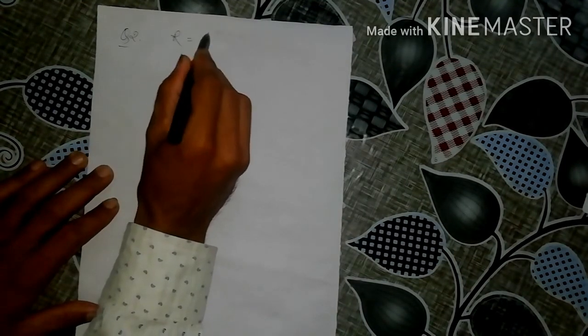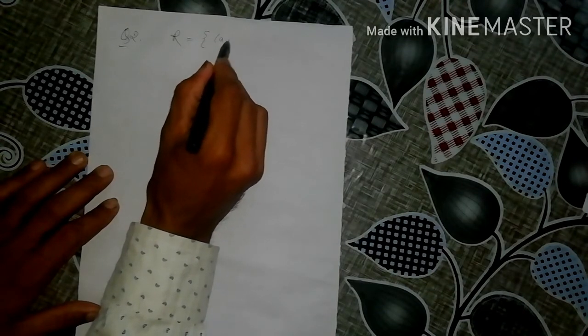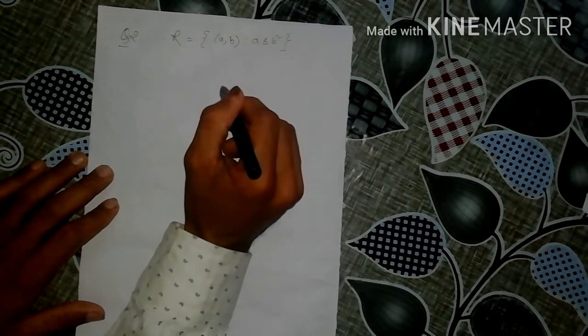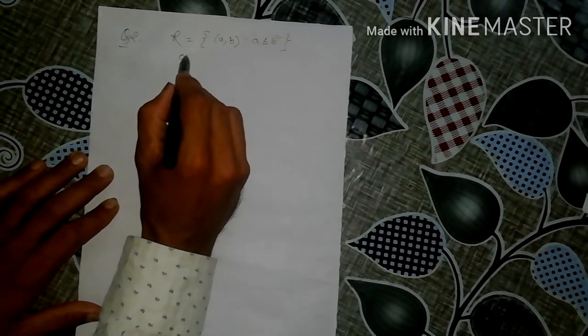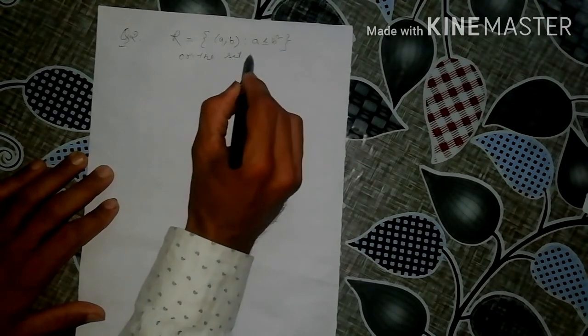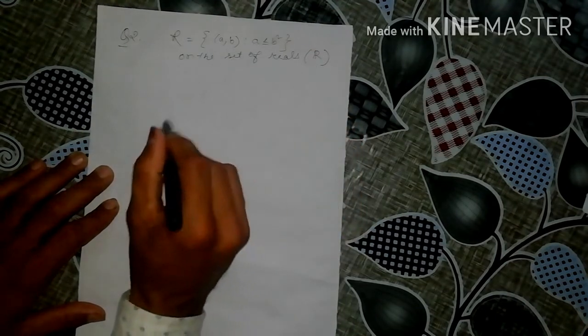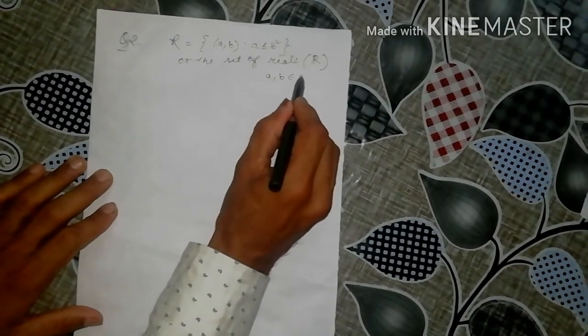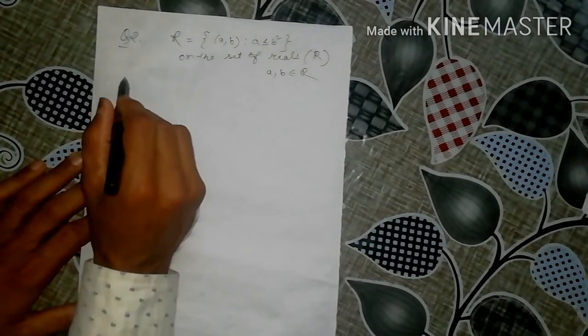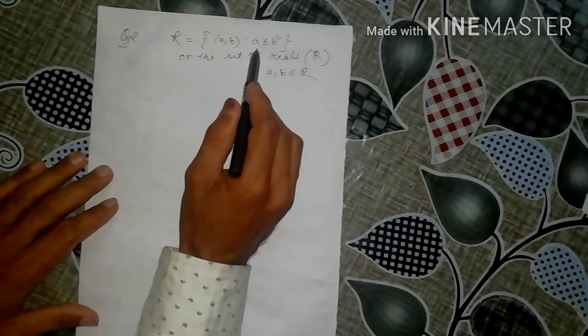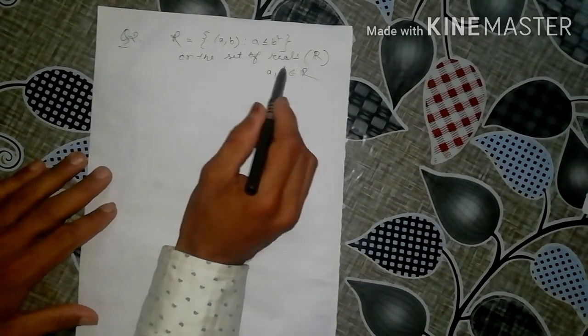Now question number 2. The relation is on the set of real numbers, where A R B means a ≤ b². We need to show it is neither reflexive nor symmetric nor transitive.